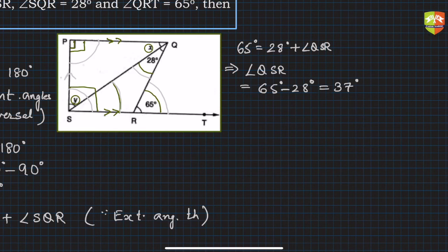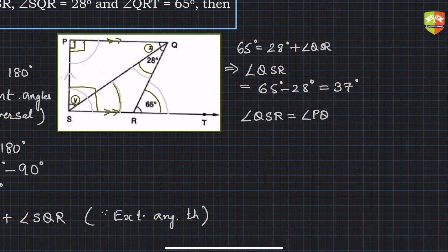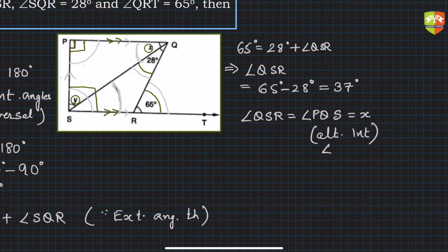Now, angle QSR equals angle PQS, which equals x. This is because of alternate interior angles of two parallel lines — PQ is parallel to SR — so this angle and that angle are the same. Therefore x equals 37 degrees.